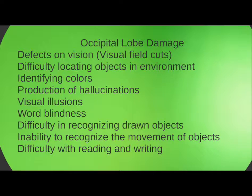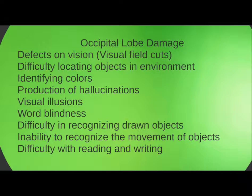If you have damage to the occipital lobe, you're going to lose some visual fields, have difficulty locating objects in the environment, difficulty identifying colors, and may have hallucinations as a result of impaired optical vision. You'll also have visual illusions, word blindness, and difficulty recognizing drawn objects — all coming back to difficulty processing vision. Central blindness is where a person has occipital lobe damage but their eyes and optic chiasm are fully intact and working; however, when information reaches the occipital lobe, there's no ability to process it.